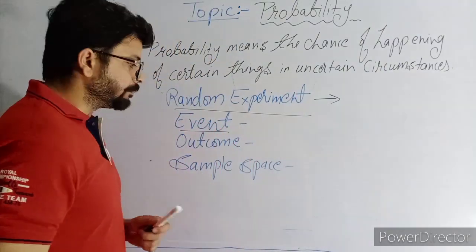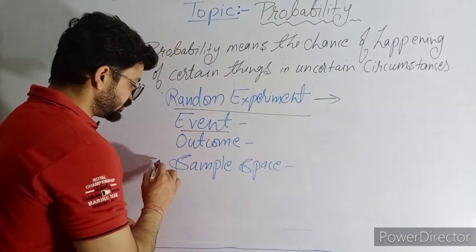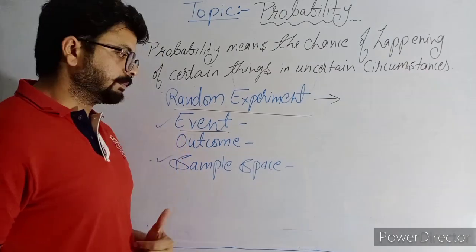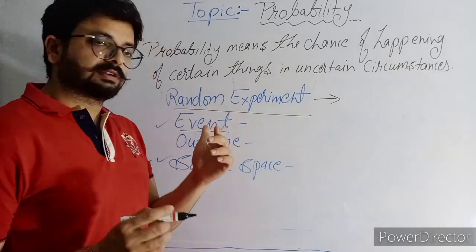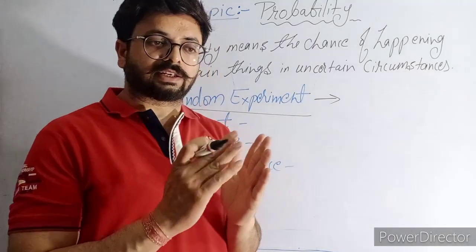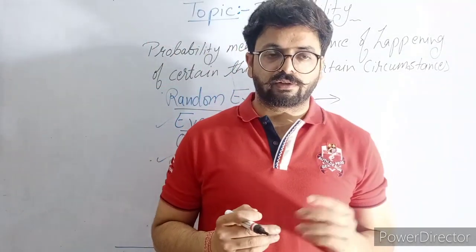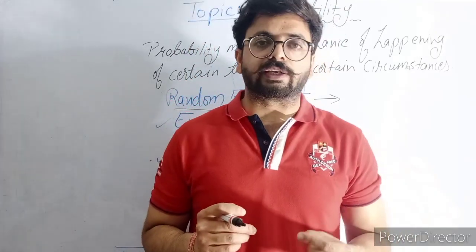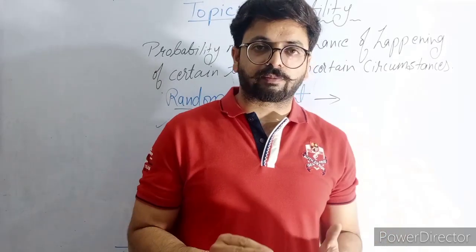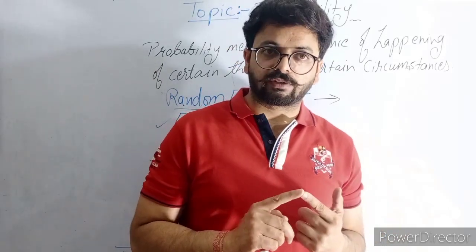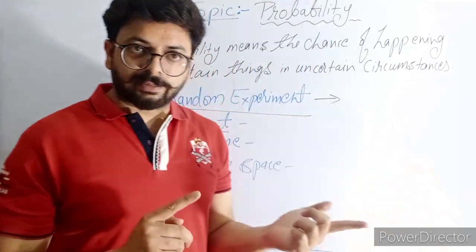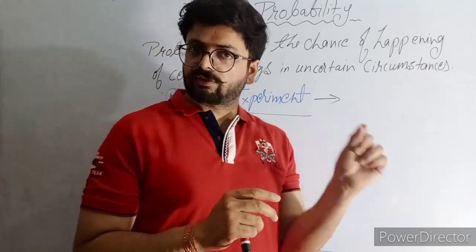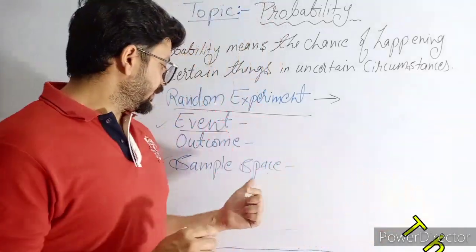Now, sample space — this is the most important part of probability. An event means what outcome is coming exactly at the end. Suppose I'm throwing a dice and two is coming or five is coming — that is the event. The outcome itself is not the event; the complete process is the event, and the outcome is, say, five.